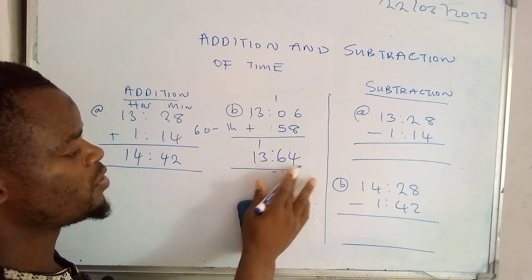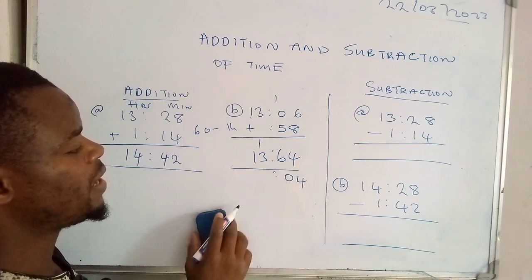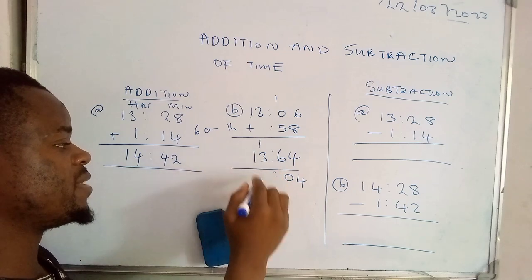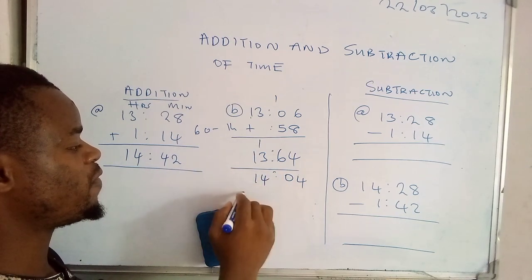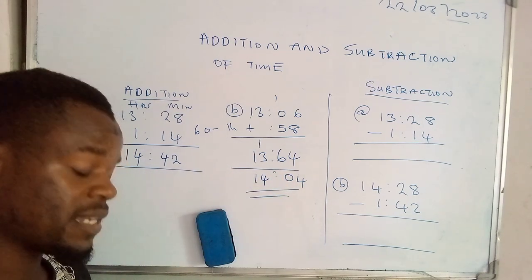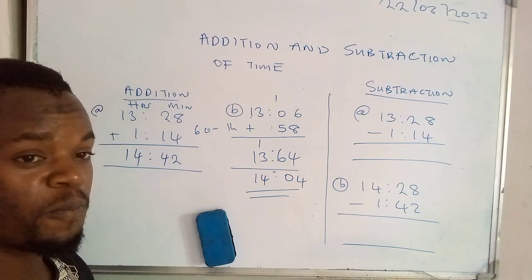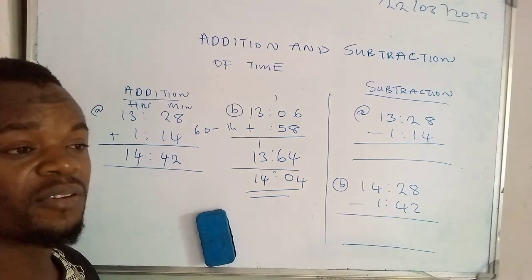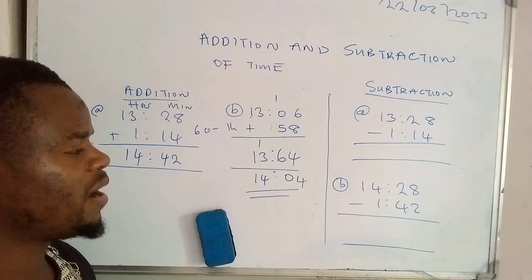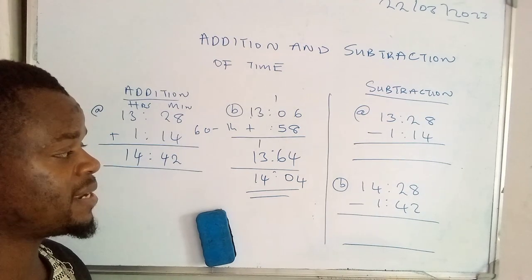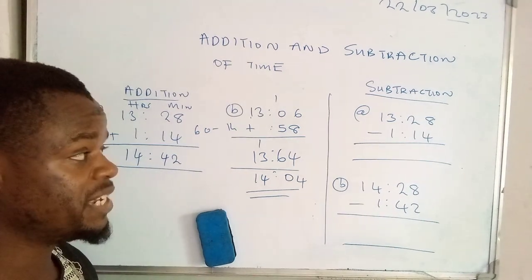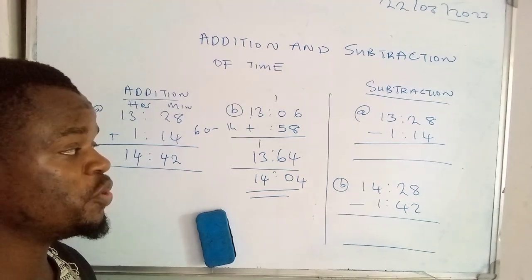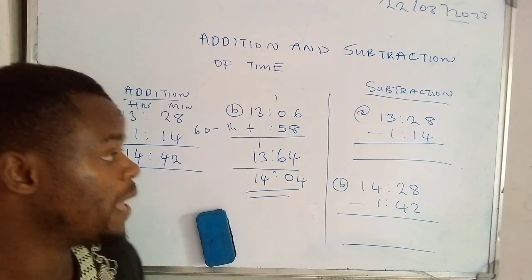So one hour will be added to the hours. This side we're going to remain with 4 minutes. So what we're going to remain with is 04, and then that one hour will be added to 13 hours, so we're going to have 14. So now the time will be 14:04. That's how we go about addition of time. I need to know that a calculator doesn't understand addition of time, so you have to do this on a piece of paper.